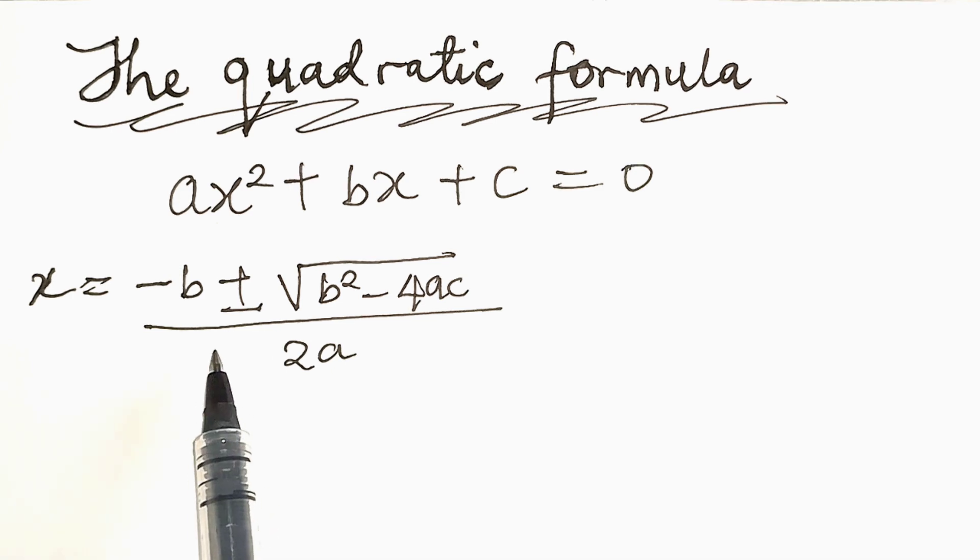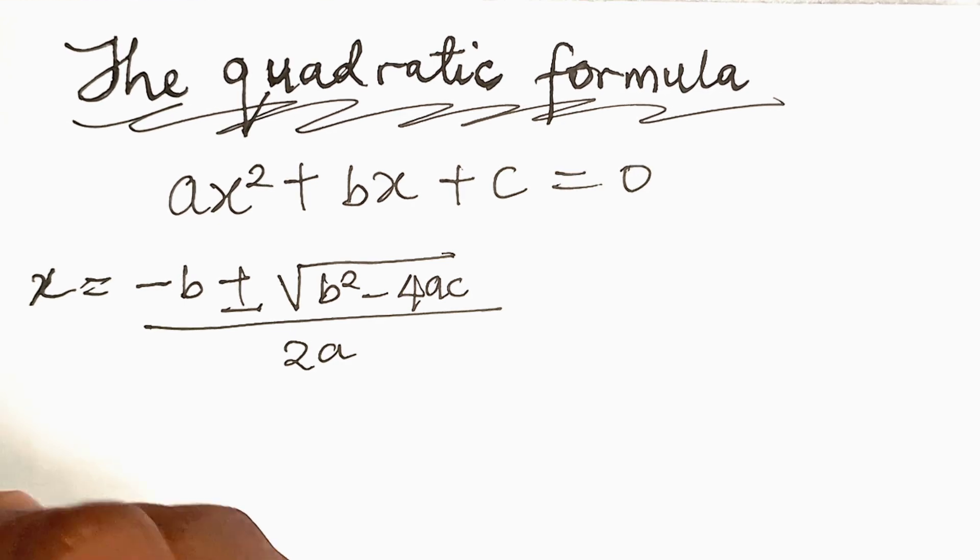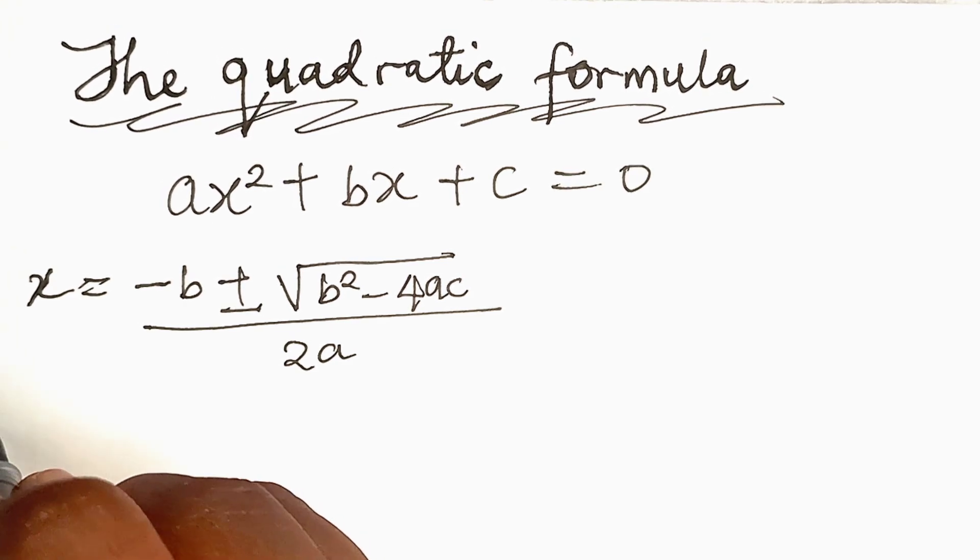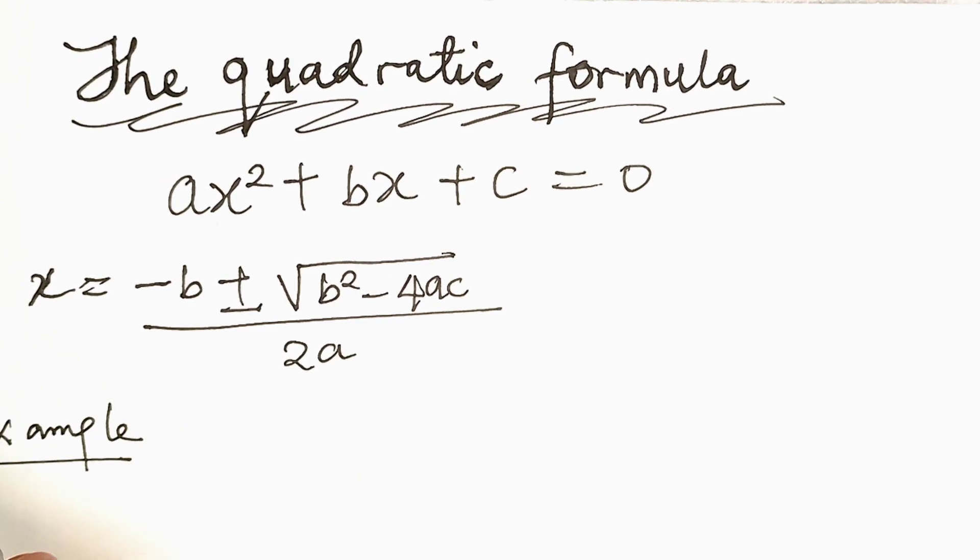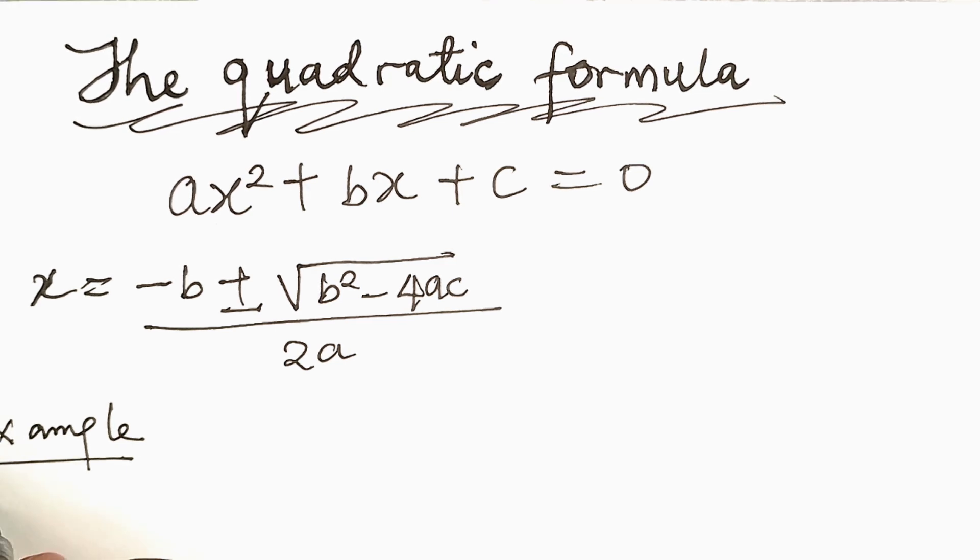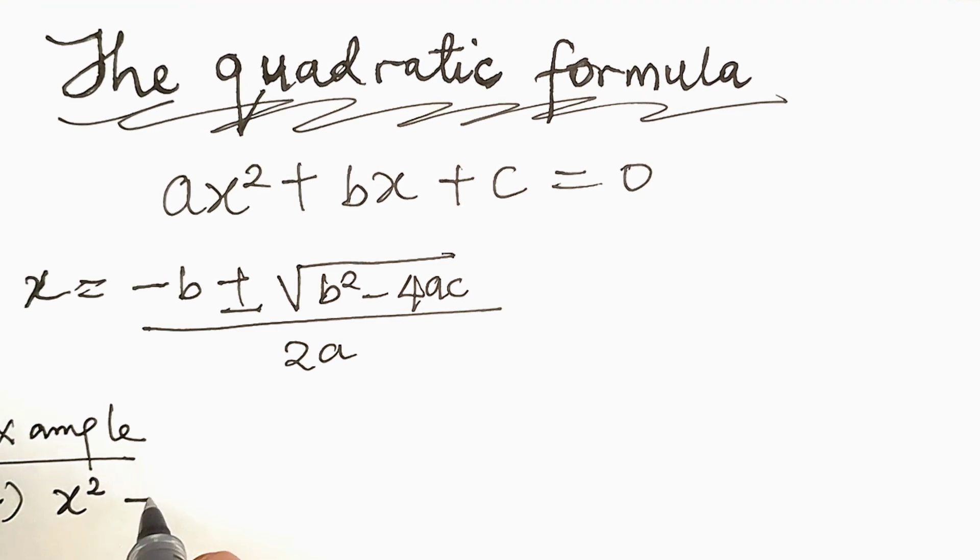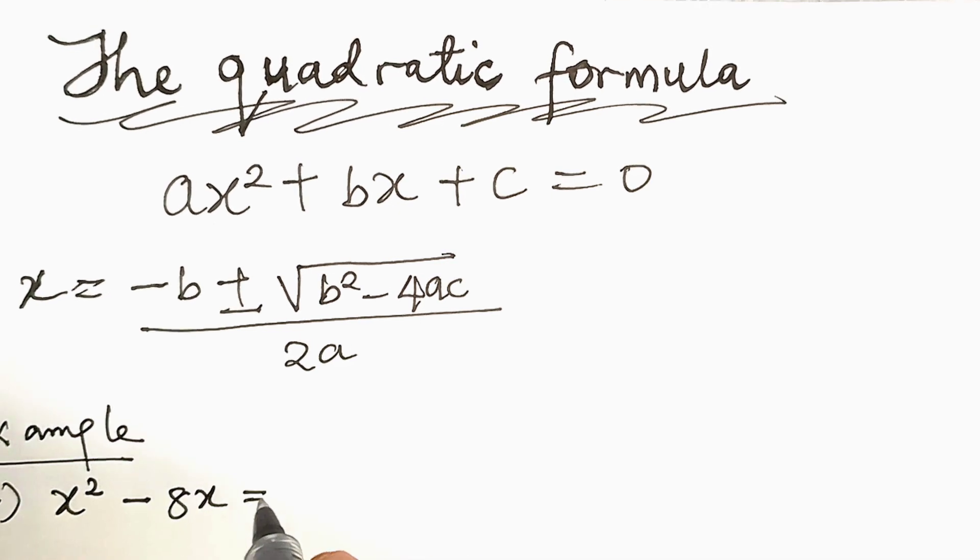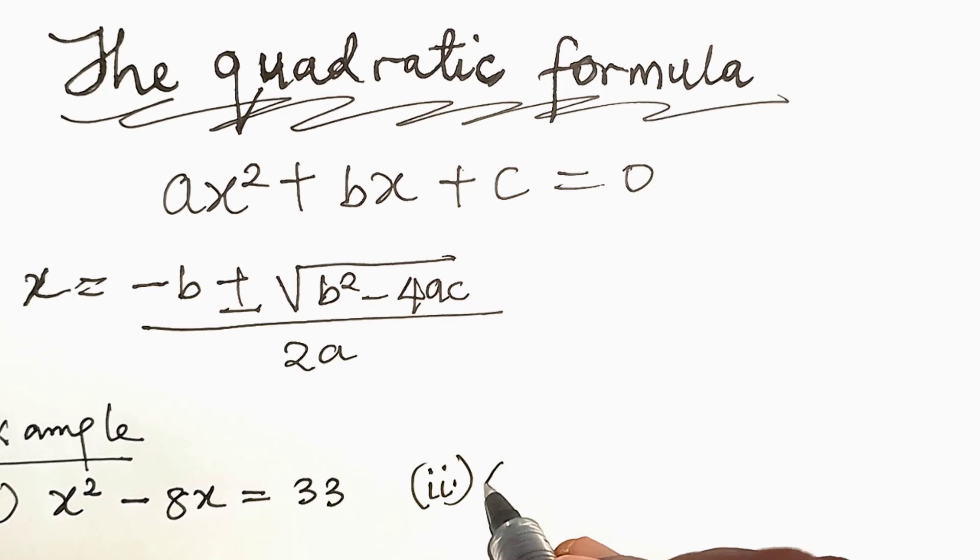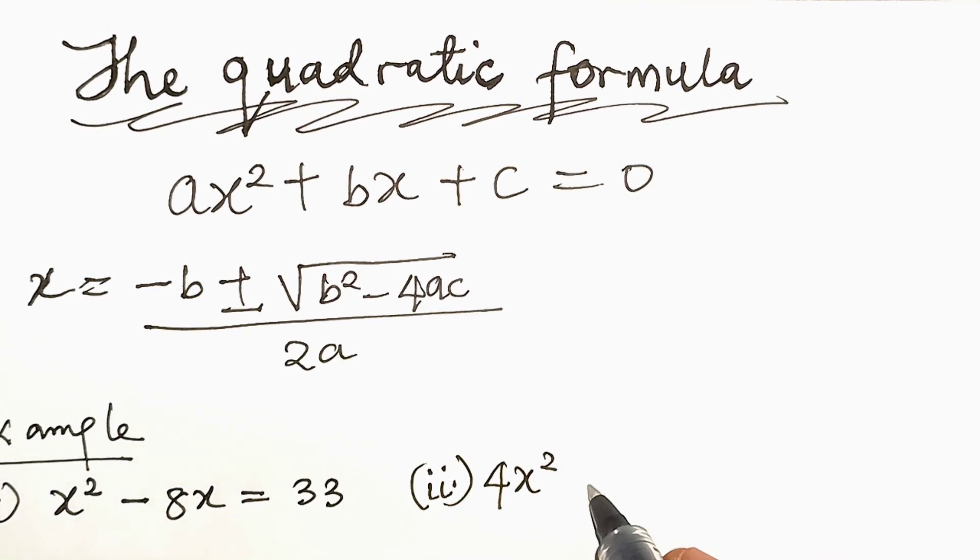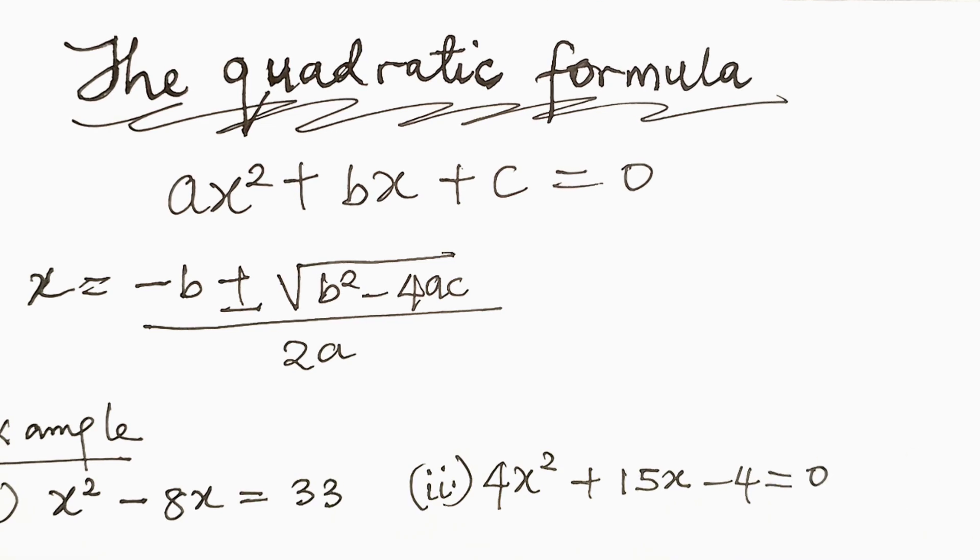Now, let's illustrate the use of the quadratic formula with examples. Example: Use the quadratic formula to solve 1, x squared minus 8x equal to 33 and 2, 4x squared plus 15x minus 4 equal to 0.